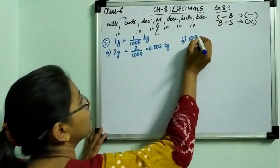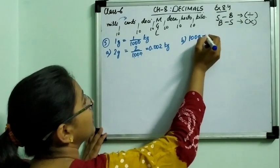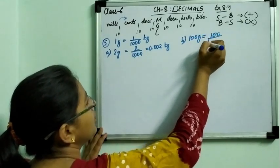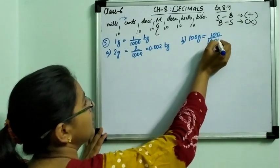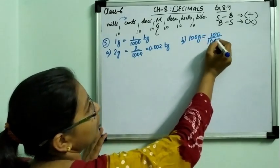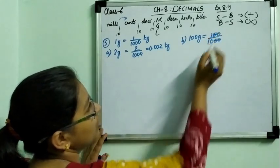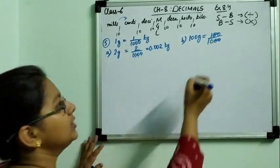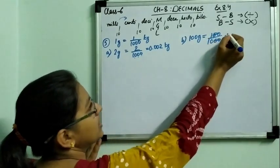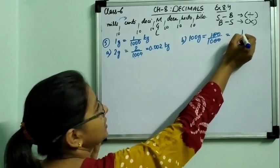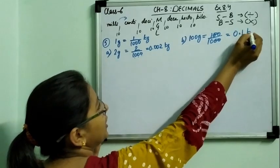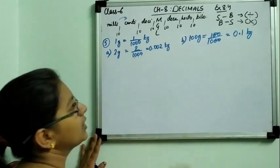In part B it is 100 gram. Converting to kilogram: 100 upon 1000. The two zeros cancel, leaving 1 upon 10. So decimal after one place — that is 0.1 kilogram.